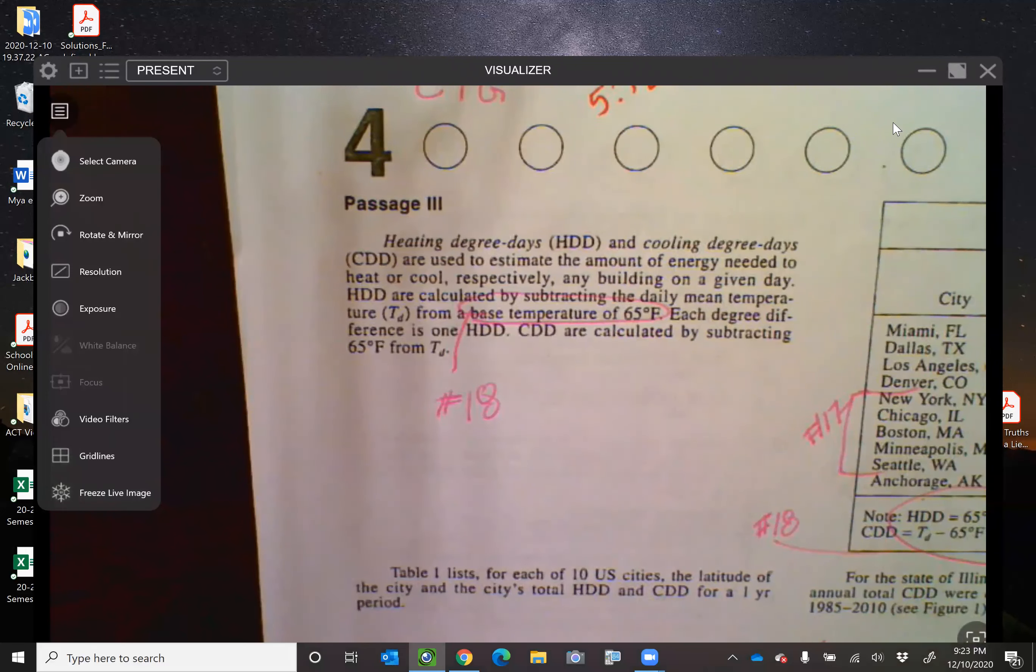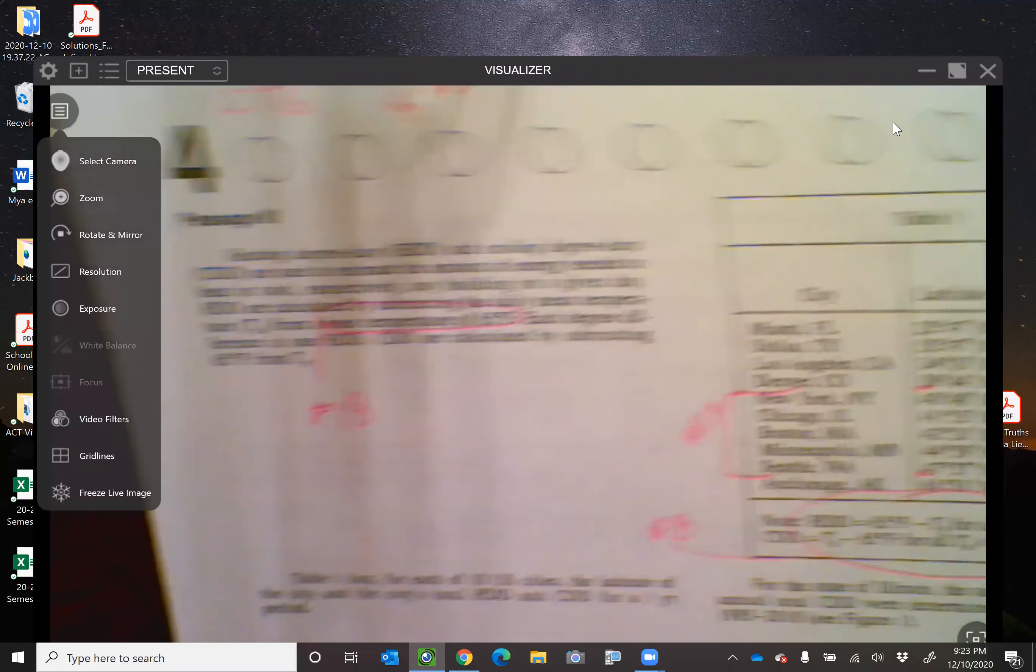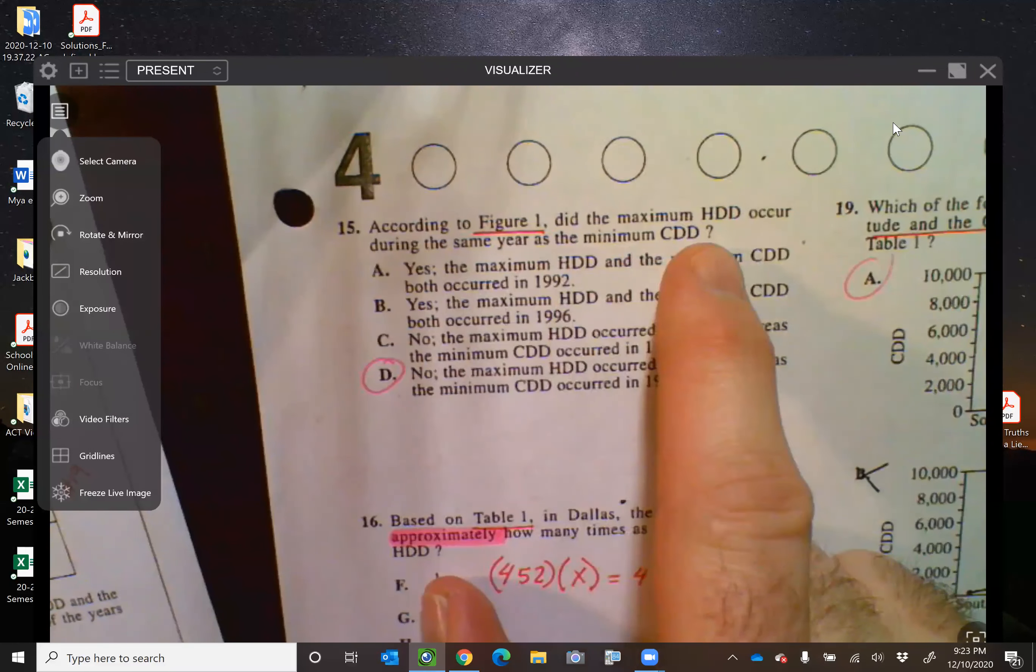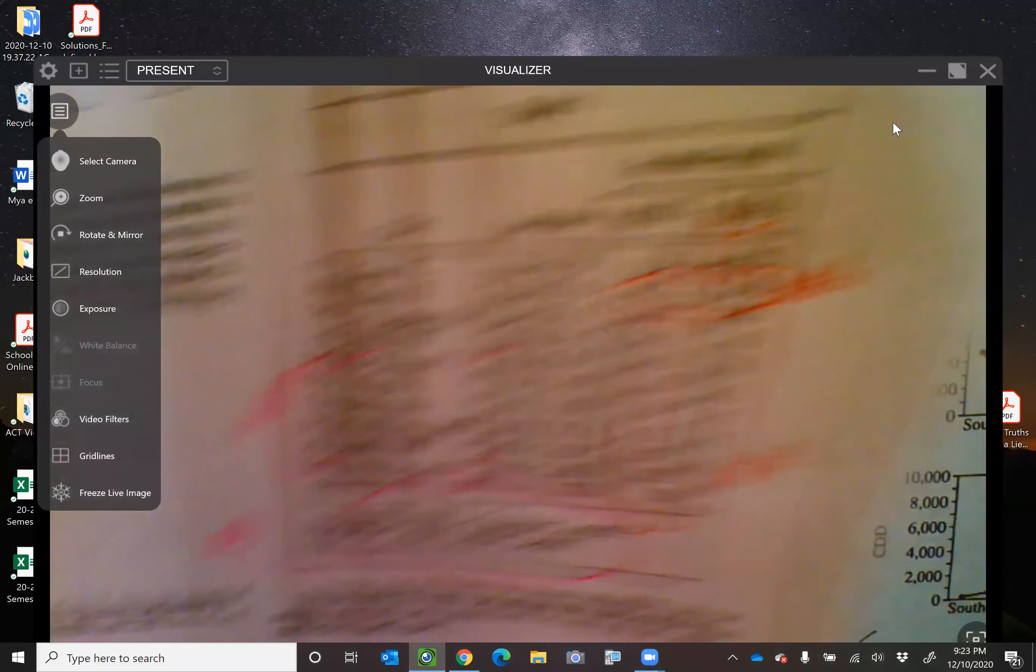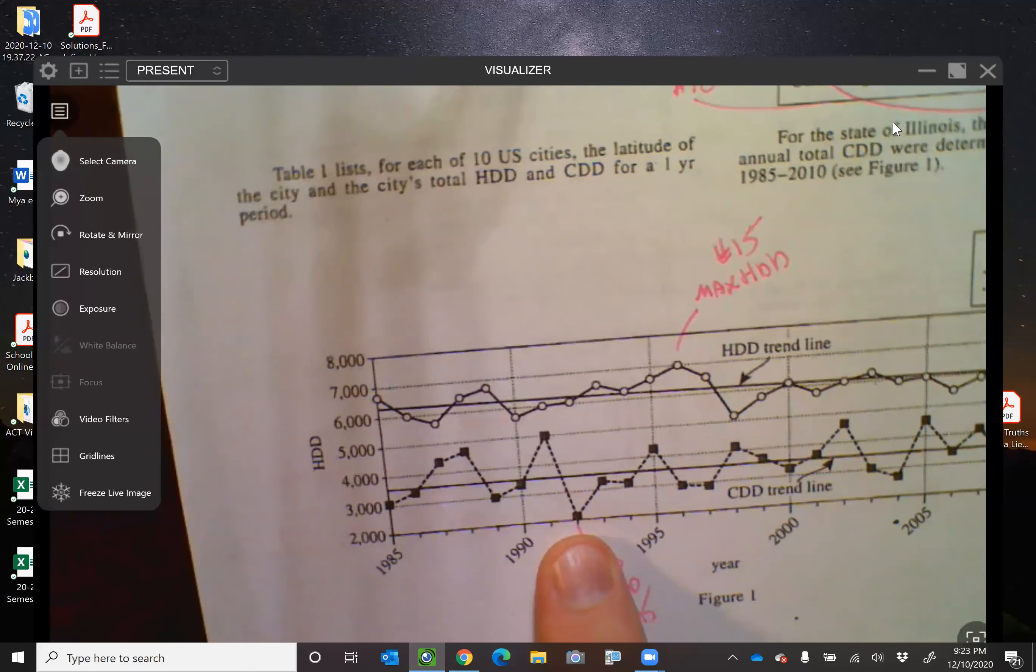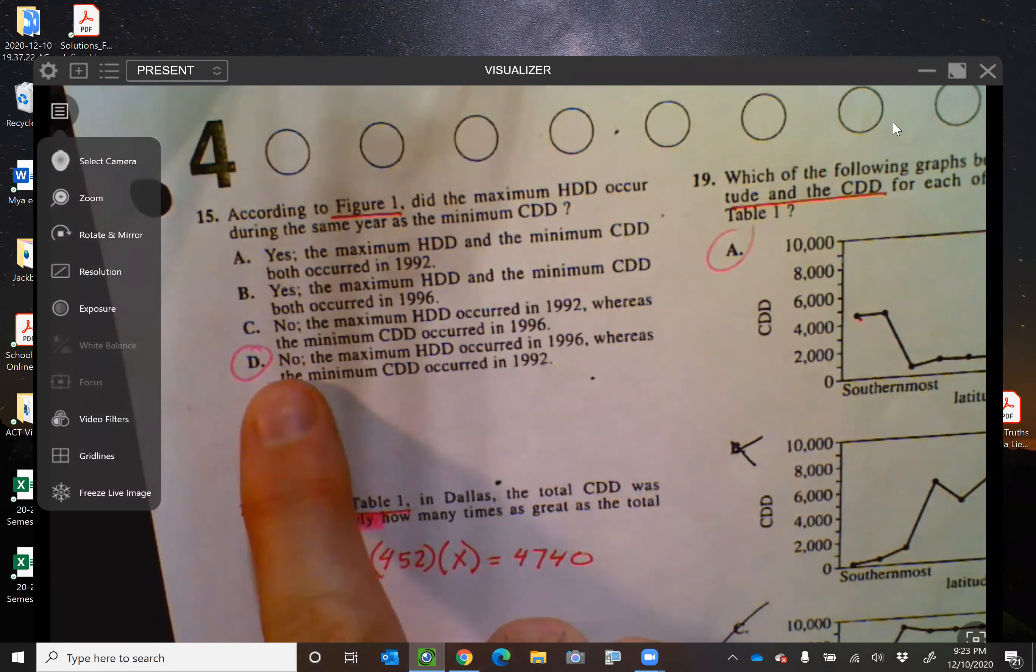Okay. So passage number three, dealing with HDD and CDD trend lines. Number 15, according to figure one, did the maximum HDD occur at the same year as the minimum CDD? The answer is no, because the minimum is right here, and that's around 1992. And the maximum HDD is right here, which is in 1996. So that's why it's letter D.